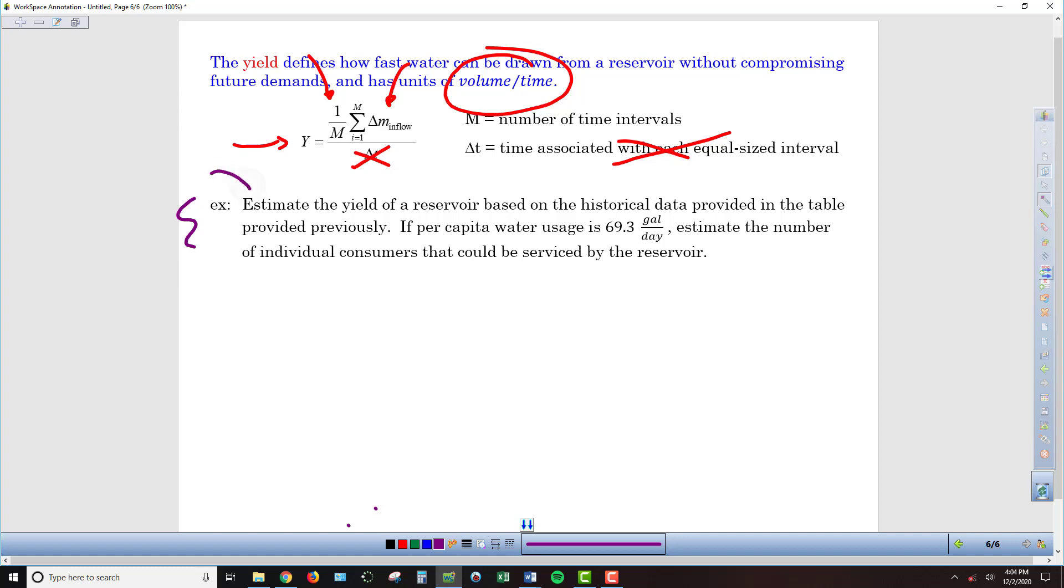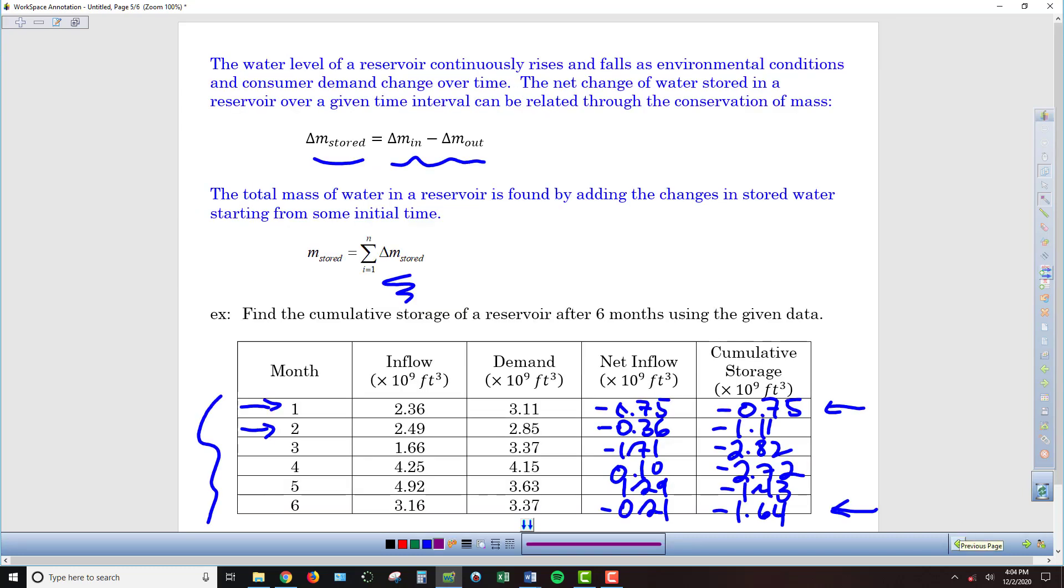The first thing that we're asked to do is estimate what the yield of a reservoir is using the historical data from the previous example. Of course, this would be done over a longer period of time, but we're just using this limited data to not overwhelm ourselves. So I'm going back to this inflow right here. Because again, yield is based on the inflow. So we can figure out what that is on a monthly basis, so that should be on average what we're taking out.